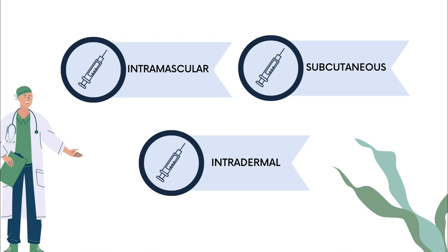The second is subcutaneous vaccine, which is administered into the subcutaneous or fatty layer beneath the skin at a 45-degree angle. The last one is the intradermal vaccine, which is administered into the outer layers of skin between the epidermis and dermis at a 5 to 15-degree angle.